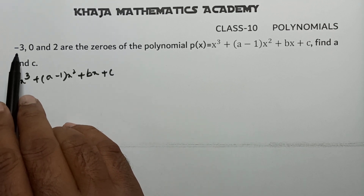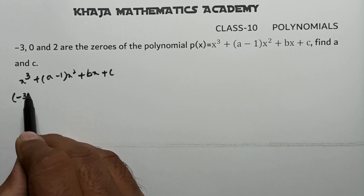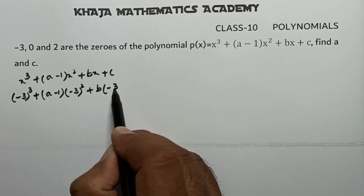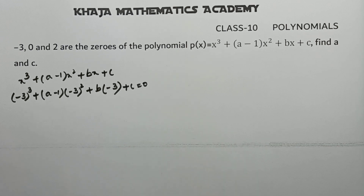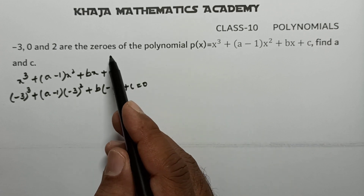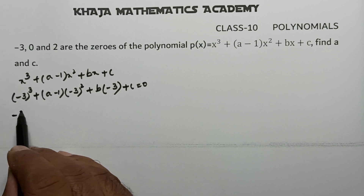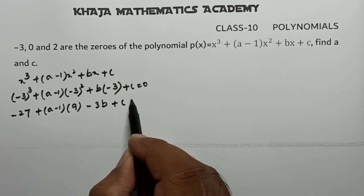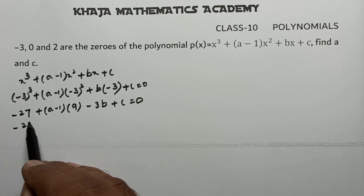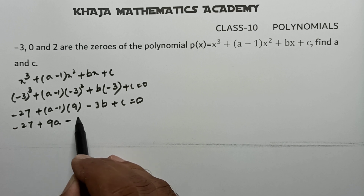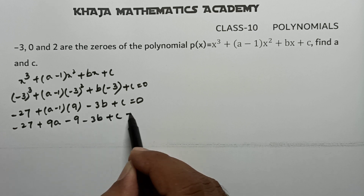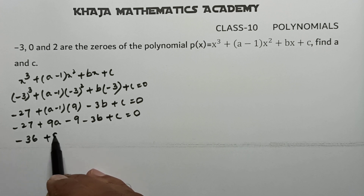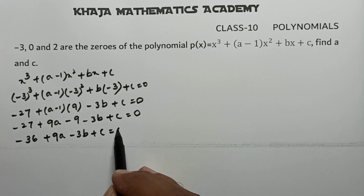Since -3 is a zero of the polynomial, substitute x = -3: (-3)³ + (a-1)(-3)² + b(-3) + c = 0. This gives -27 + 9(a-1) - 3b + c = 0, which simplifies to -27 + 9a - 9 - 3b + c = 0, so -36 + 9a - 3b + c = 0. Leave this as equation 1.